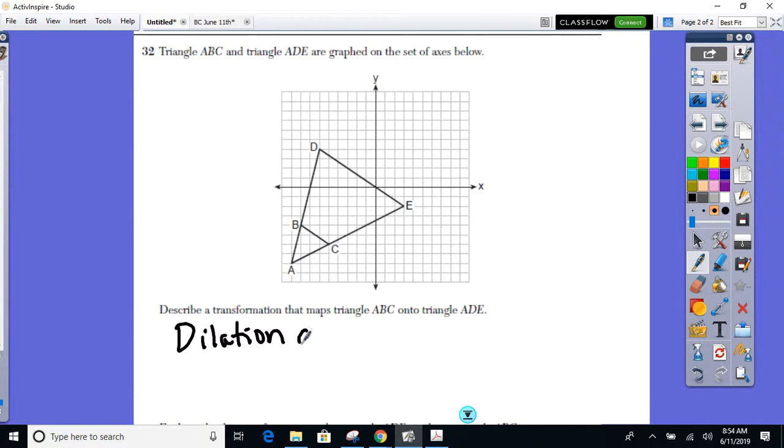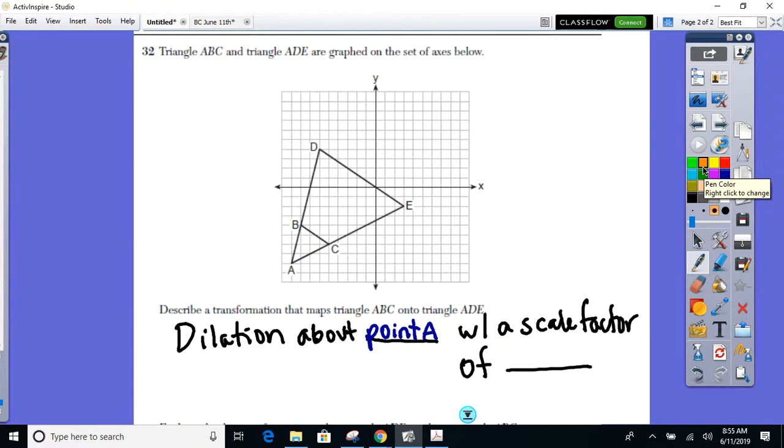We need a dilation about something with a scale factor of something. That's what we need to find. Well, first of all, are we getting bigger or smaller as we go from ABC to ADE? Bigger. So at least I know in my mind, this number I'm about to put here for the scale factor has got to be bigger than one. Let's start actually here because this is the easier part, where I'm dilating about. What point didn't change? A. So that's the point I've got to dilate around, point A. Now to the scale factor.